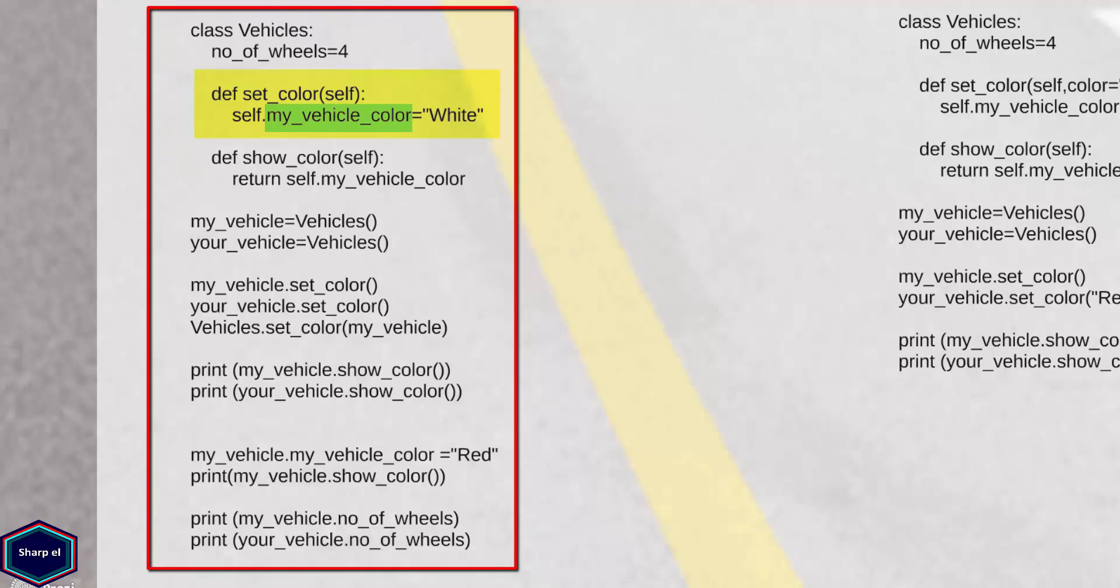In Python we have also class attributes. The difference between class and instance attribute is that a class attribute is shared by all instances. An instance attribute is unique to an instance. In our example, number of wheels is a class attribute whereas myVehicleColor is an instance attribute.